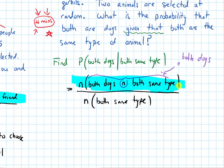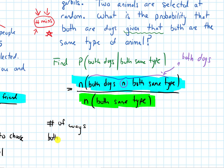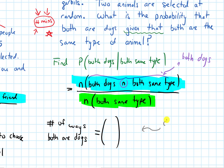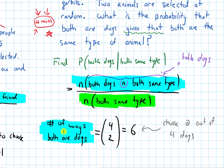I'm going to highlight the numerator in blue and the denominator in green. For the numerator, we're counting the number of ways that both are dogs — in other words, the number of ways to pick two dogs. The order in which we pick the dogs doesn't matter, so we use a combination: four choose two. That gives us six. So the numerator is six.